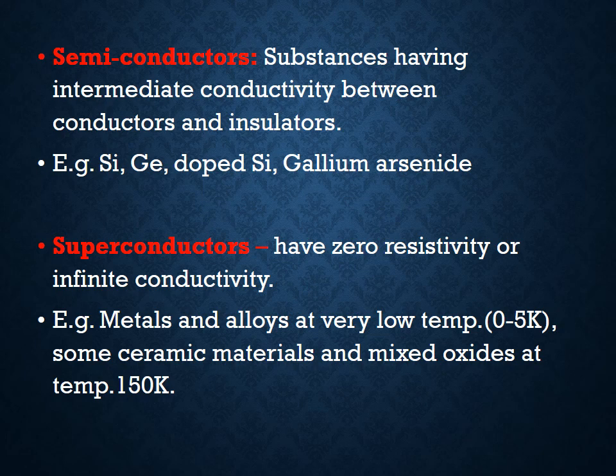Examples of semiconductors include silicon, germanium, doped silicon, and gallium arsenide. Superconductors have zero resistivity or infinite conductivity — that is, their conductivity is maximum. Examples include metals and alloys at very low temperature (0 to 5 Kelvin), and some ceramic materials and mixed oxides at a temperature of 150 Kelvin.